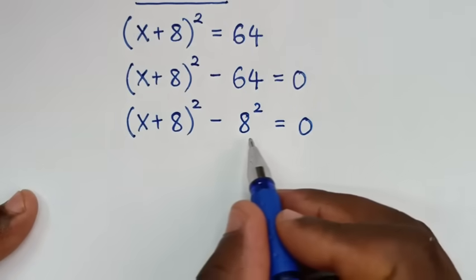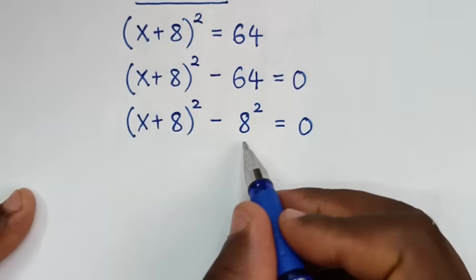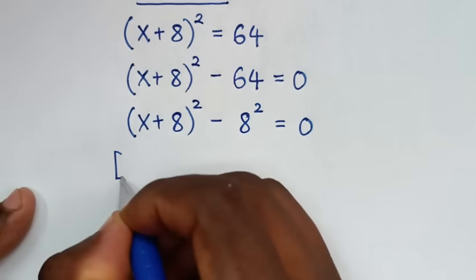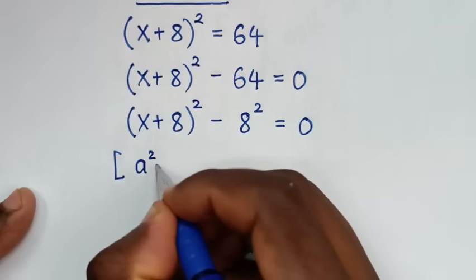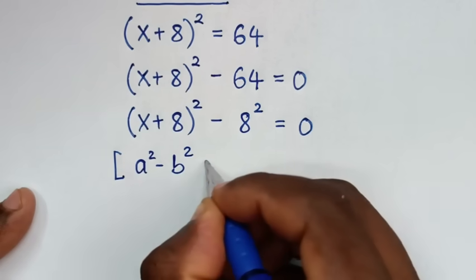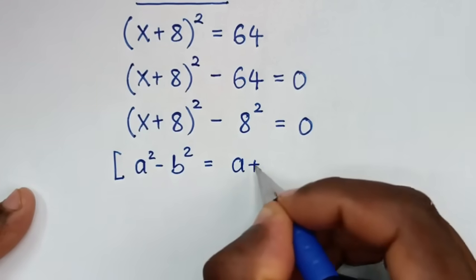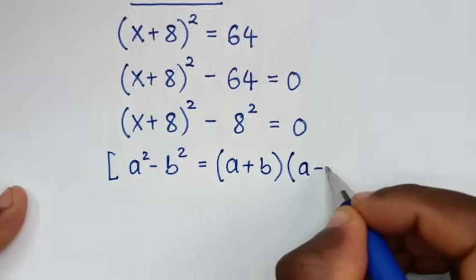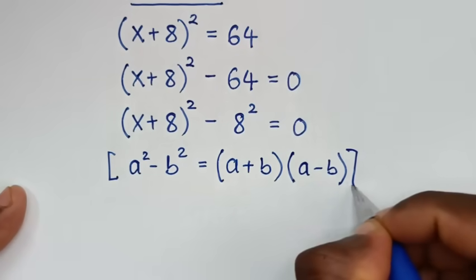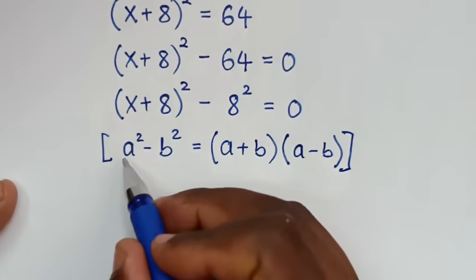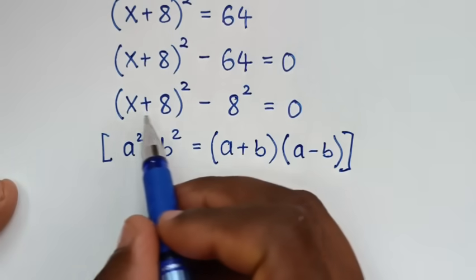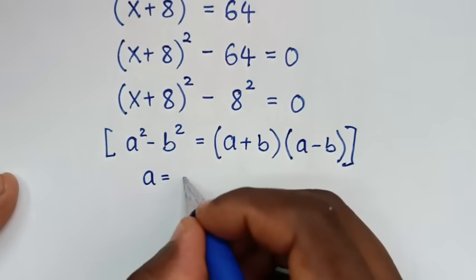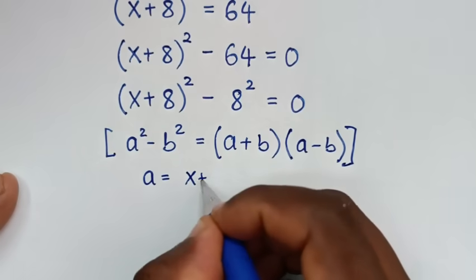Now this is in the form of difference of two squares. So we'll apply the difference of two squares rule, which is a² minus b² = (a + b)(a − b). When we compare a² with (x + 8)², so a = x + 8.